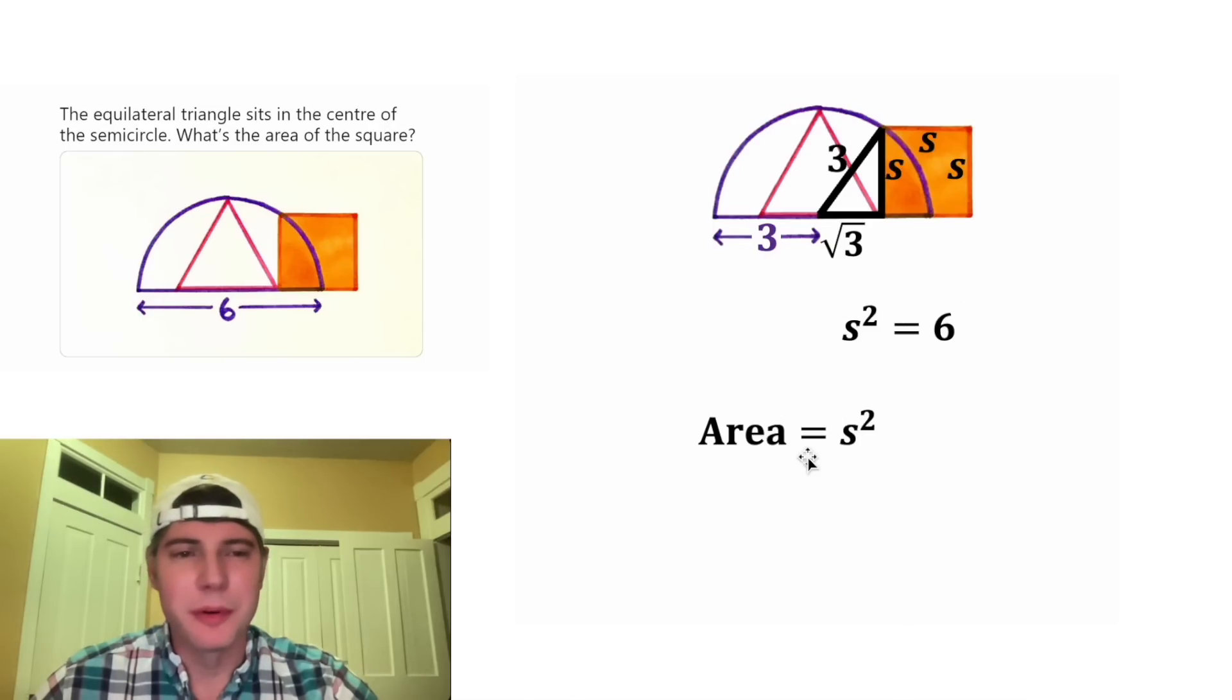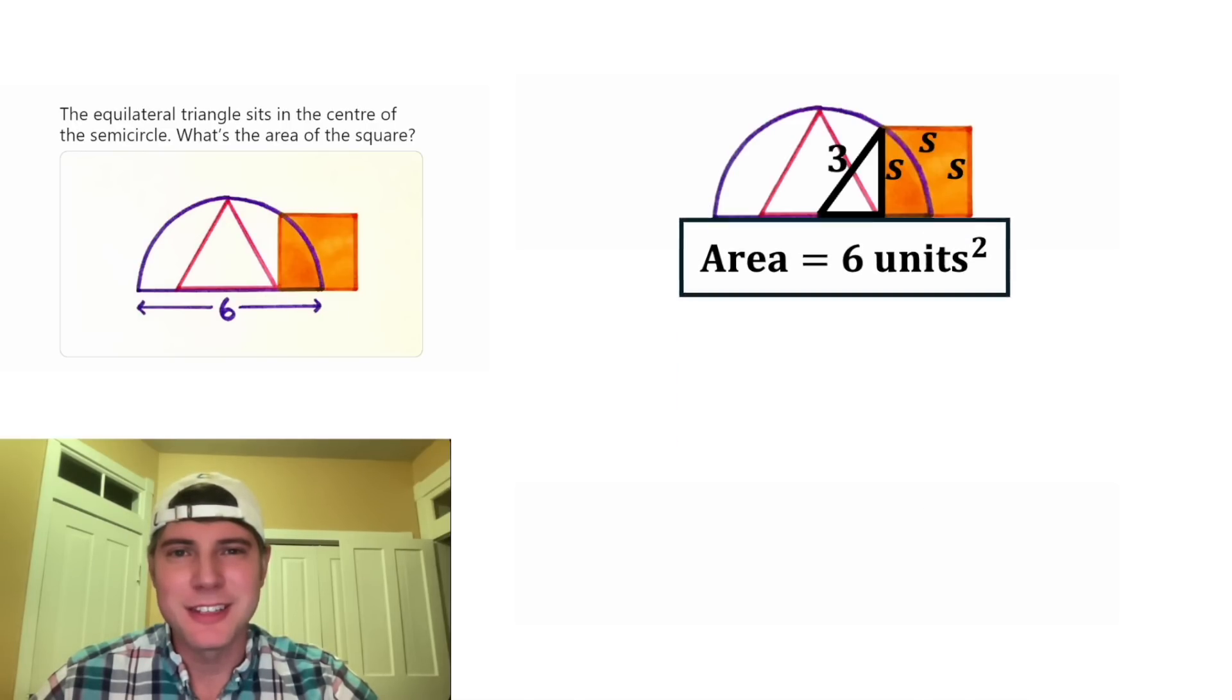And S squared is what we were looking for. So in the place of this S squared, let's plug in 6. This is the area of the orange square. Let's give it a label of unit squared and put a box around it. How exciting.